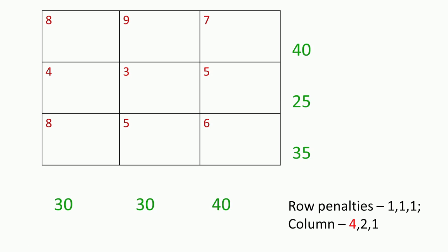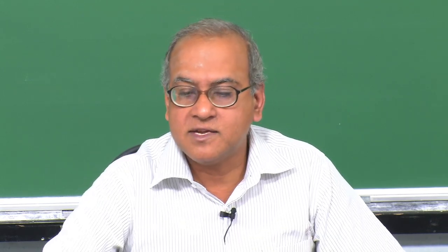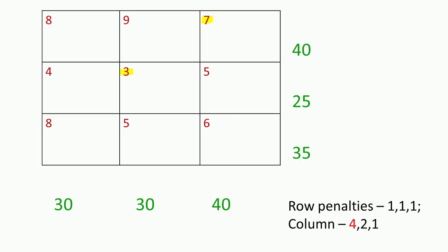If we want to allocate this 40 without at present looking at the demands, we would ideally put all the 40 to its least cost position, which happens to be 7. We would like to put it there, or try to put as much as we can in the least cost position. Similarly, for the supply of 25, we would like to put as much as we can in the least cost position, and for 35 as well.